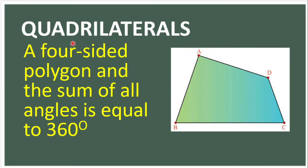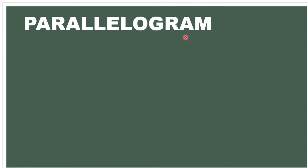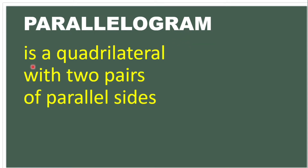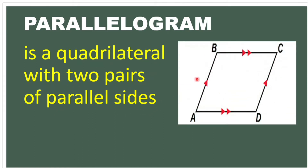We have different kinds of quadrilaterals. We have the parallelogram. A parallelogram is a quadrilateral with two pairs of parallel sides. So we have here side AB is parallel to side DC, and side BC is parallel to side AD. So we have two pairs of parallel sides.